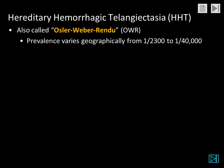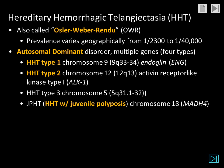Considering more details about HHT, it is also known as Osler-Weber-Rendu syndrome. The prevalence varies geographically, from as low as 1 in 40,000 to as high as 1 in 2,300. It is an autosomal dominant disorder, and four genes have been identified so far. The most common are HHT type 1 and HHT type 2. One variant is an association of hereditary hemorrhagic telangiectasia with juvenile polyposis syndrome.